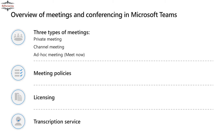In Microsoft Teams there are three primary types of conferencing. The first is private meetings, where you share a meeting URL and send an invite to specific users who can then join that meeting. The second type is channel-based meetings, where all members in the same team are automatically invited and can access recordings as well as discussions from that meeting.